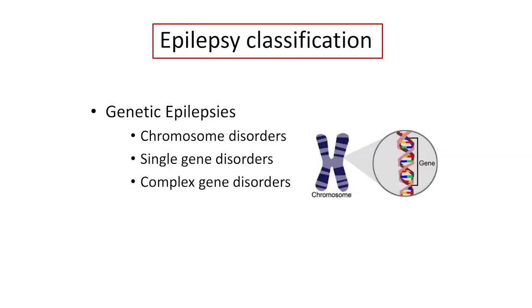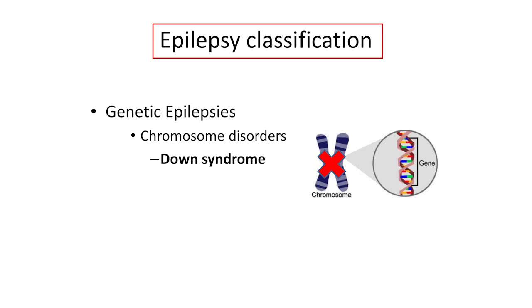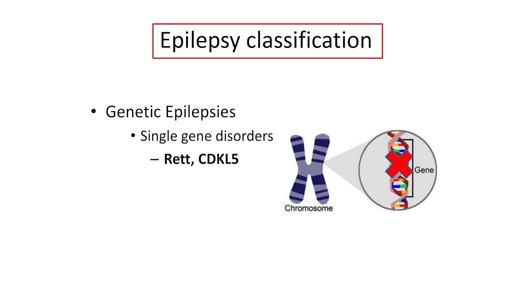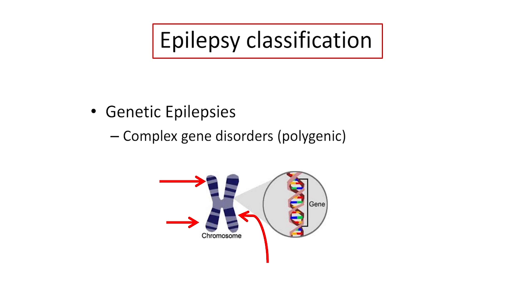In classifying genetic epilepsies, we can think about chromosomes, single genes, or complex genes. An example of a chromosome disorder frequently associated with epilepsy is Down syndrome, where a chromosome abnormality leads to various reasons why the cell can become hyperexcitable. In Rett and CDKL5, it's at the gene level — an abnormality of a particular gene leads to the disorder. Most genetic epilepsies are called complex, involving several different genes, each of which alone would not cause epilepsy, but when combined together it leads to that condition.